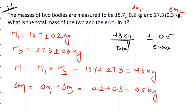Here we have two bodies of mass given. The masses of two bodies are measured to be 15.7 kg, and the error in this is 0.2 kg. In the same way, the second body mass is 27.3 kg, and the error is 0.3 kg. Now we have to calculate the total mass of the two and the error in it.